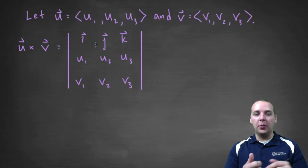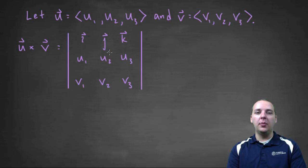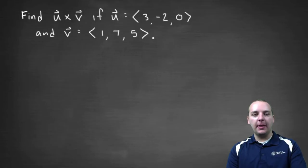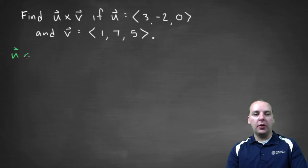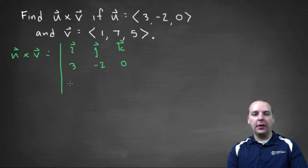You can't just pop it in the calculator for most calculators that you probably have, so we'll do it by hand and that's totally fine. So we'll have u cross v as a 3 by 3 determinant, with standard unit vectors i, j, and k as the top row, then 3, negative 2, 0 as the second row, and then 1, 7, 5 as the third row.